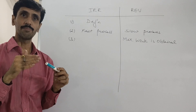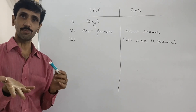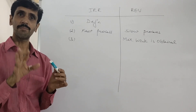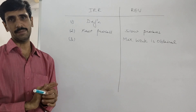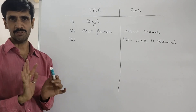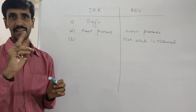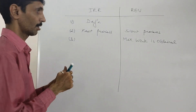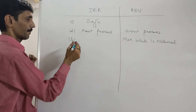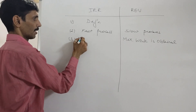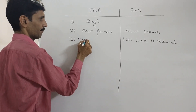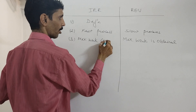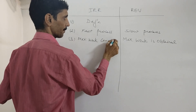Instead of saying minimum work is obtained, you just say maximum work cannot be obtained. Because there is a change in the meaning. So for an irreversible process, maximum work cannot be obtained.